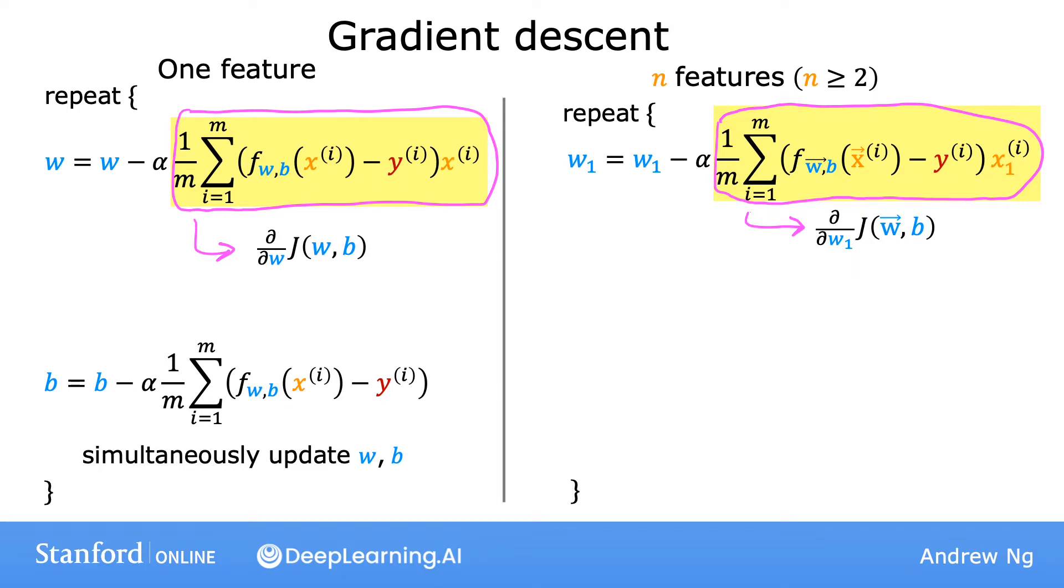The error term still takes a prediction f minus the target y. One difference is that w and x are now vectors.